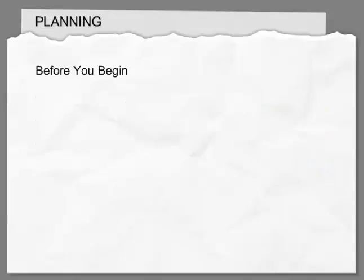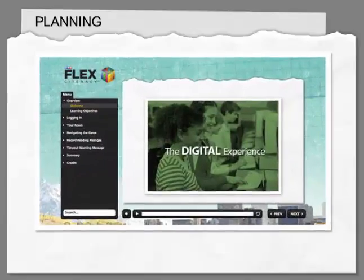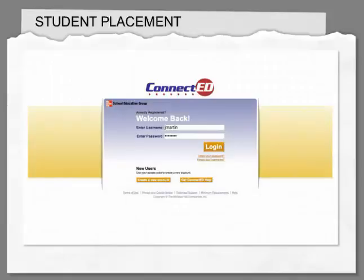Before having students begin the Digital Experience, give them their usernames and passwords. Bookmark the ConnectEd website on each computer — ConnectEd.McGrawHill.com. Make sure the headset microphones are set up to record, and show students the training module called the Digital Experience Student Walkthrough.